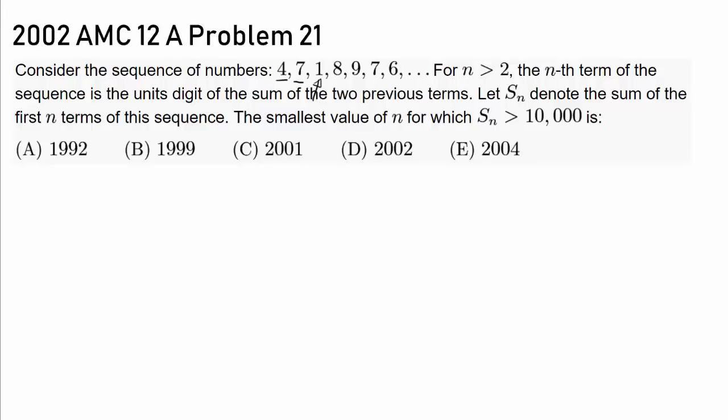And to find the next term, we did 7 plus 1 to get 8, 1 plus 8 to get 9, 8 plus 9 to get 17, but we only care about the units digit, so we care about 7. 9 plus 7 is 16 to get 6, and so on. So the next term is going to be 7 plus 6, 13, and we are going to write down 3. So we know how the sequence is constructed.